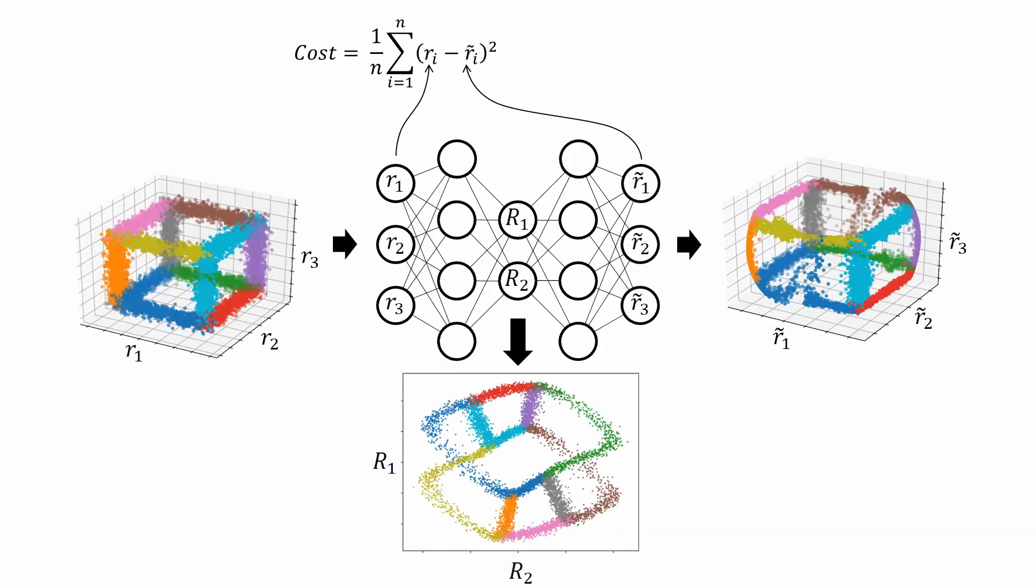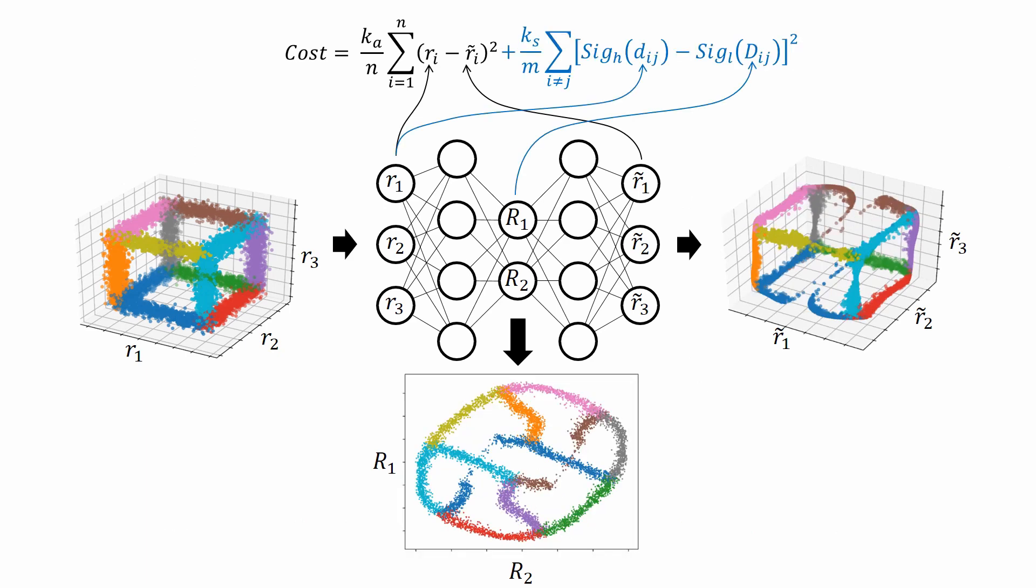Encoder map combines the autoencoder with this pairwise distance based cost function. Now the first part of the encoder map cost function compares the inputs and outputs of the autoencoder, and the second part of the cost function compares the pairwise distances in the input space with the pairwise distances in this bottleneck space, also called latent space.